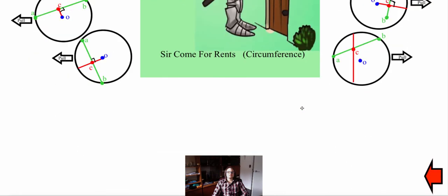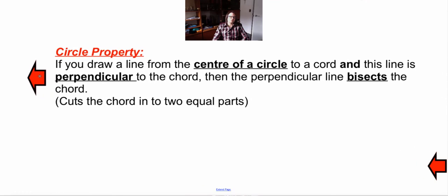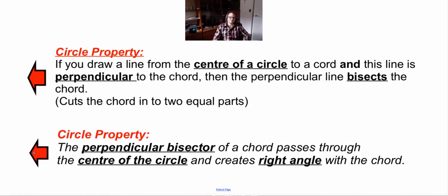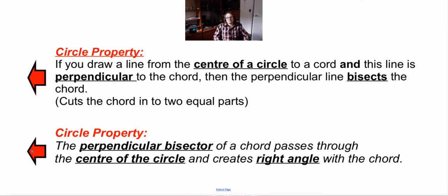Now that you're back, let's see if you figured out the rules. The rule is twofold. First: if you draw a line from the center of a circle to a chord and this line is perpendicular to the chord, then the perpendicular line bisects the chord — which means it cuts the chord into two equal parts.